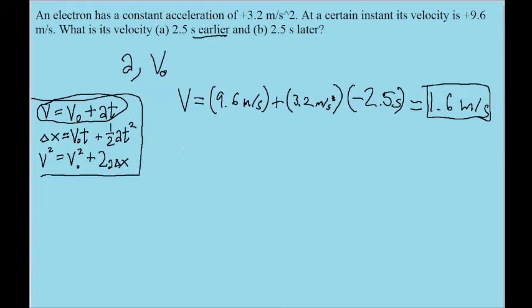Now part b asks the same thing, except we're talking about 2.5 seconds after the fact. So we'll use the exact same formula, except the only difference is that when we get to time, it's not going to be negative since we're talking about time moving positively, time moving forward. So that's positive 2.5 seconds.